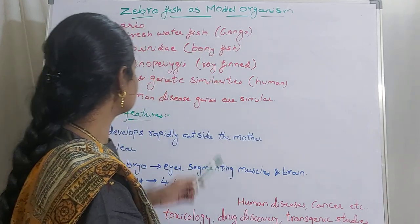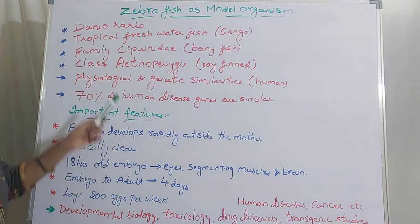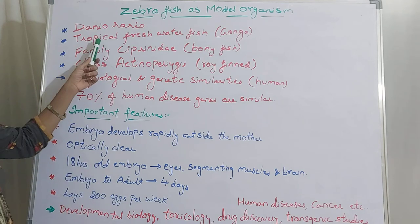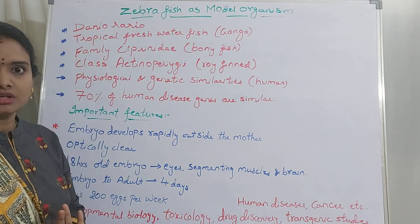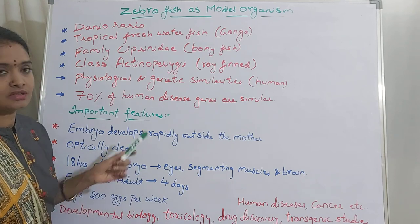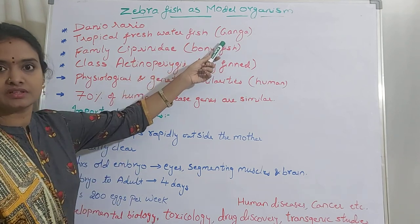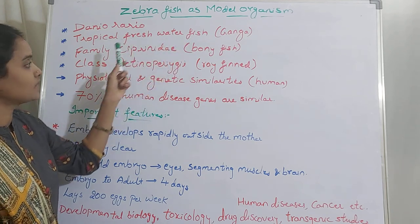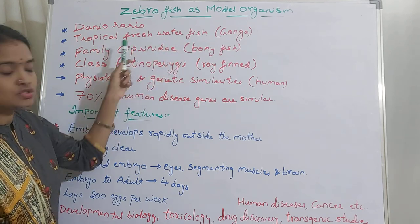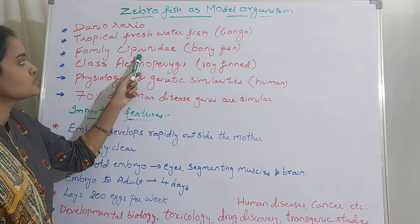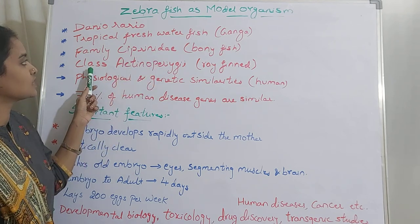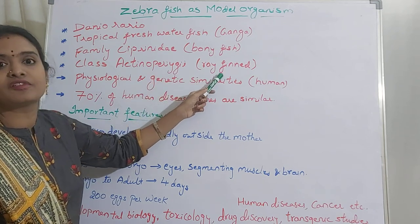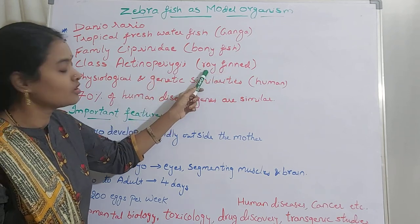The zebrafish is also referred to scientifically as Danio rerio. It is mostly an inhabitant of the Himalayan region in South Asia, near the Ganga river. It is a tropical freshwater fish and a bony fish, belonging to the family Cyprinidae and the class Actinopterygii, because it is a ray-finned fish with fins in a ray shape.